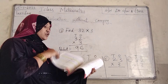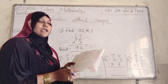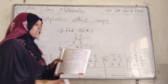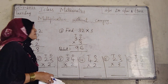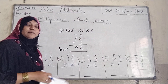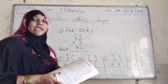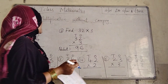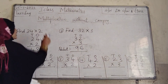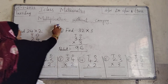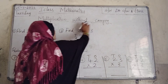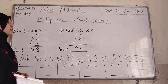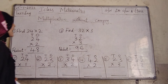All of you should have to take out your all-in-one, page number 73. Now in the previous class we learned about multiplications and number lines. Now in this class we are going to learn multiplications without carrying.